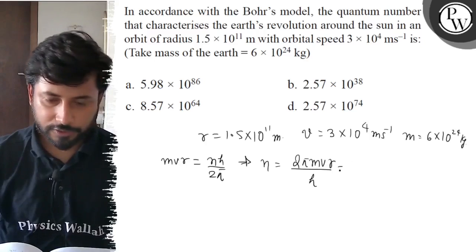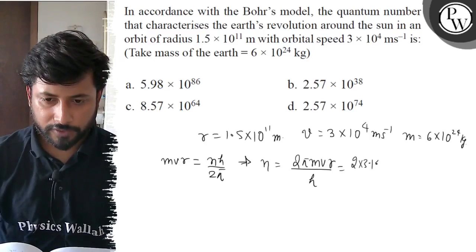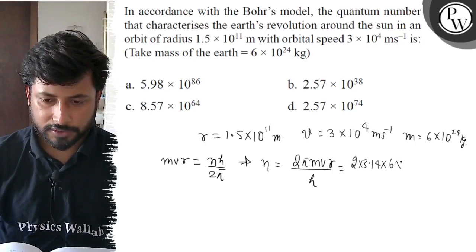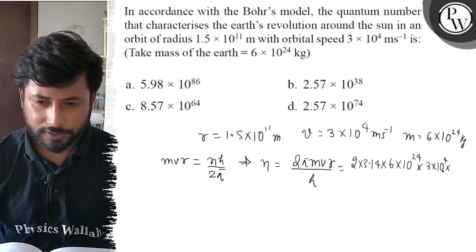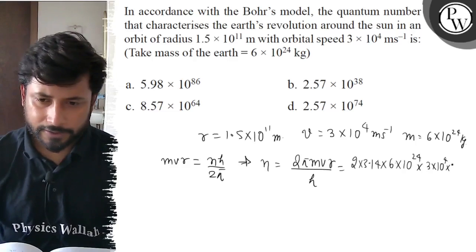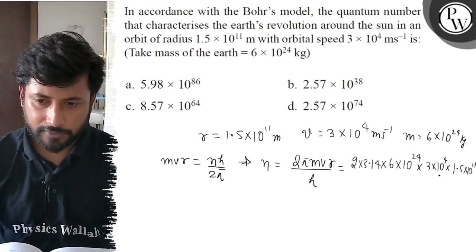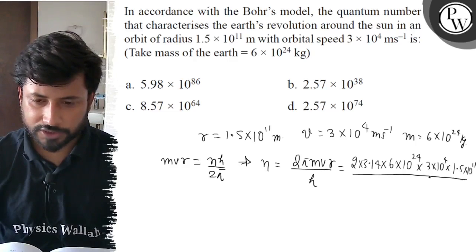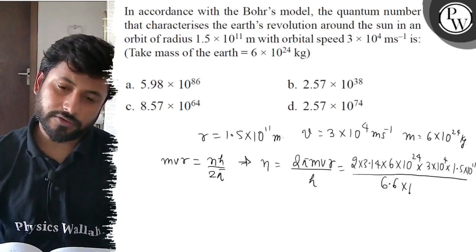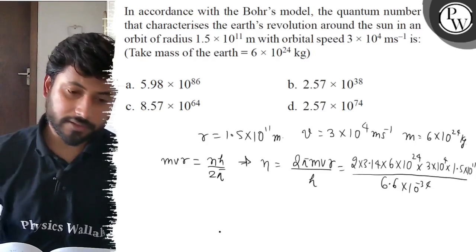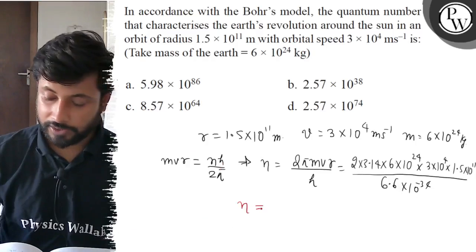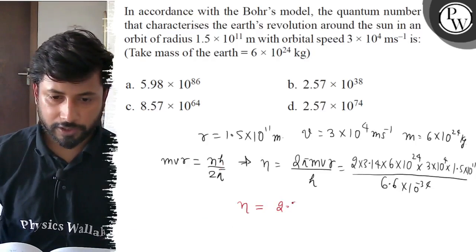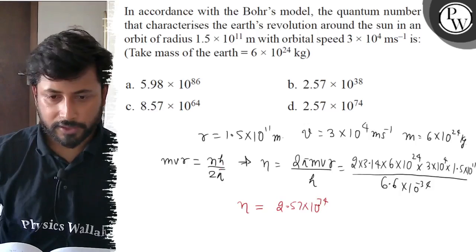Now we put values here. 2 × 3.14 × mass of Earth 6 × 10^24 × velocity 3 × 10^4 × radius 1.5 × 10^11 divided by h, 6.6 × 10^-34. Now you calculate and the n value is 2.57 × 10^74.